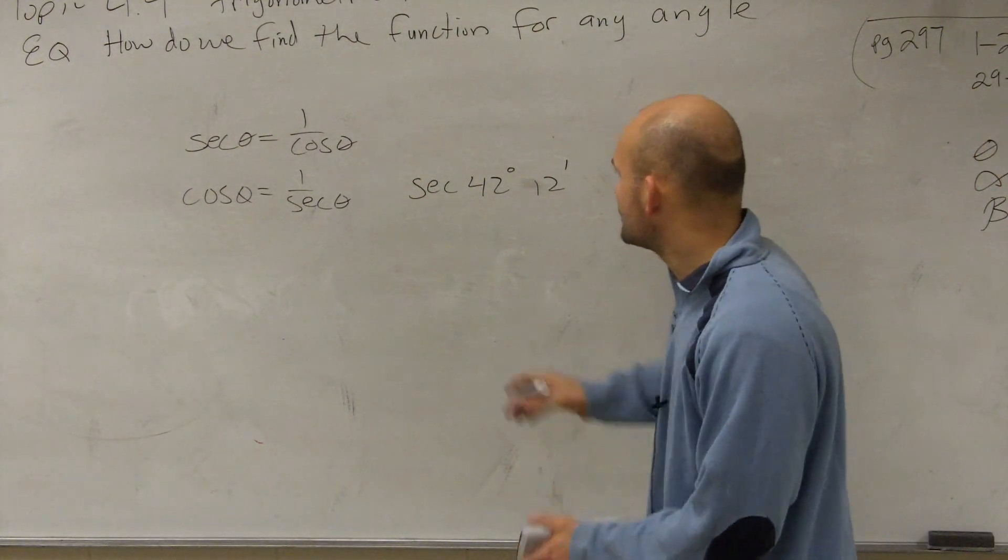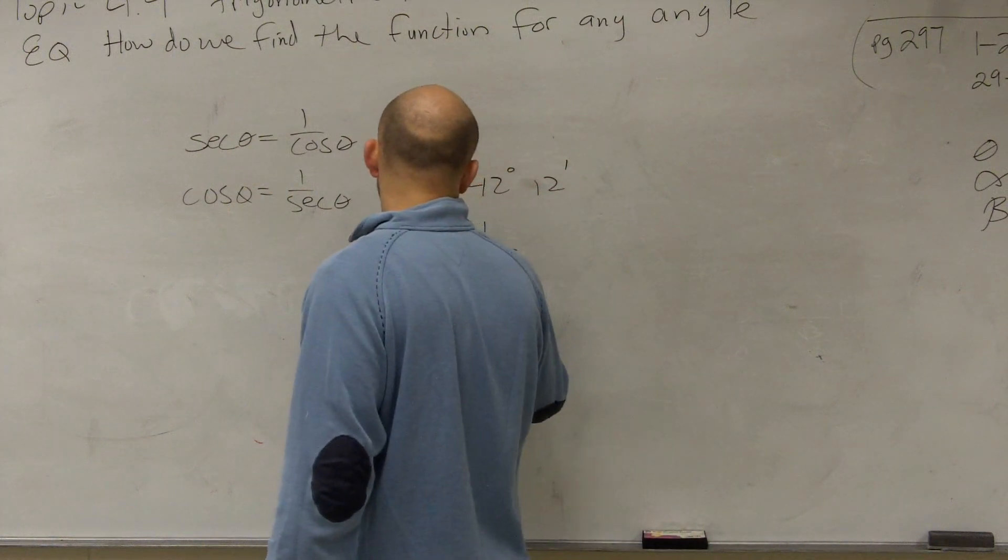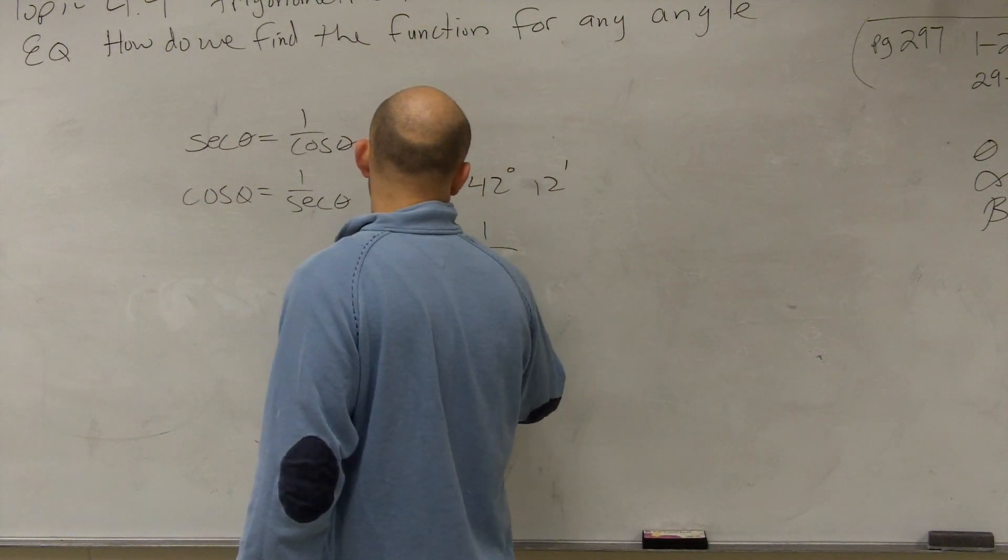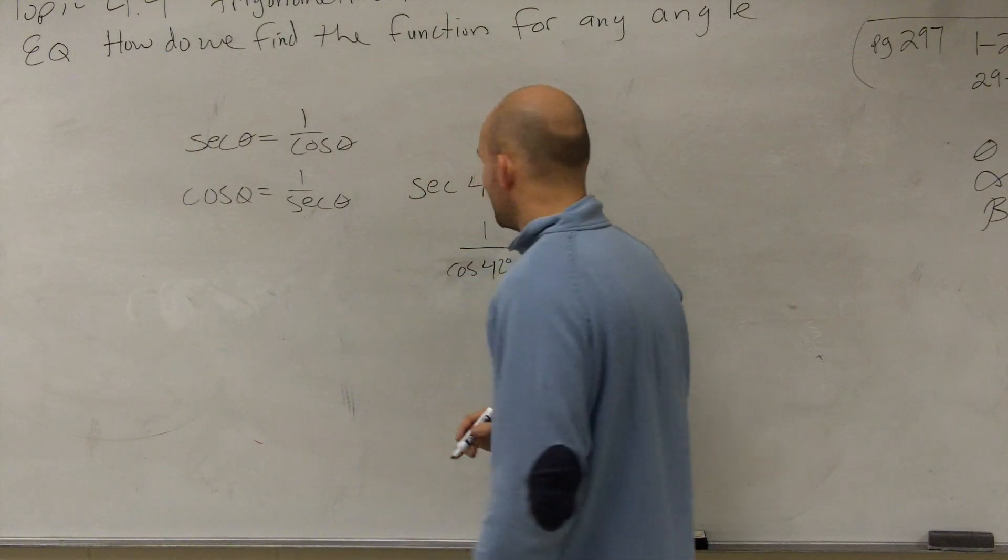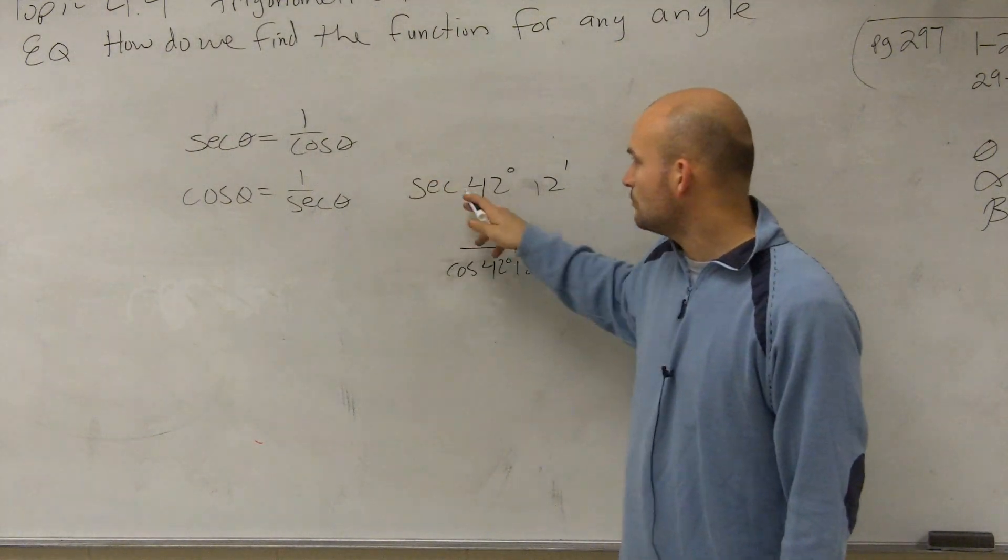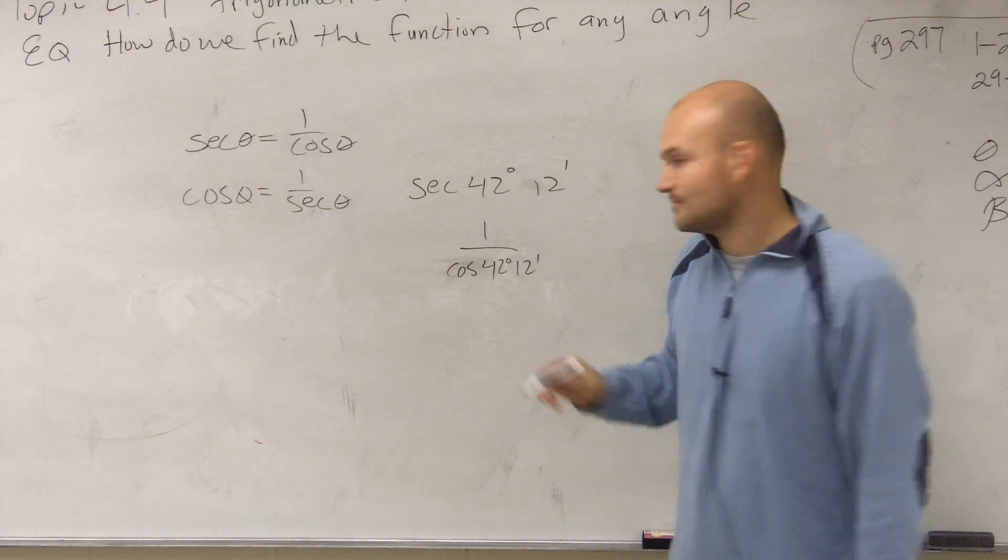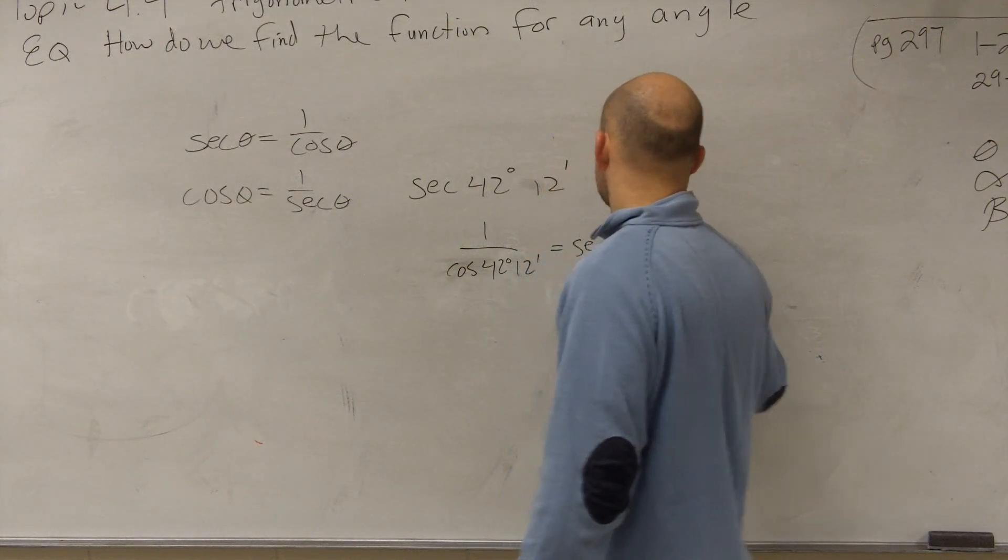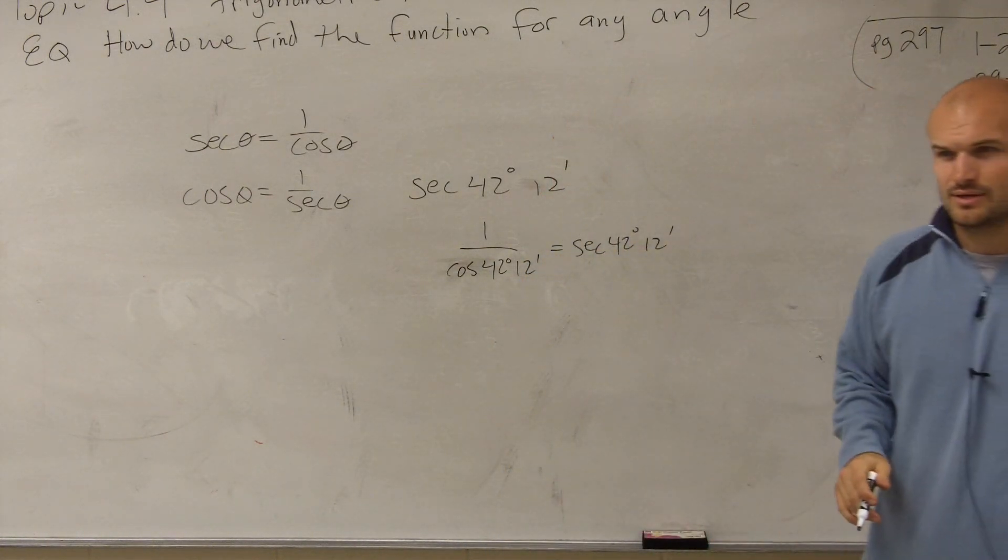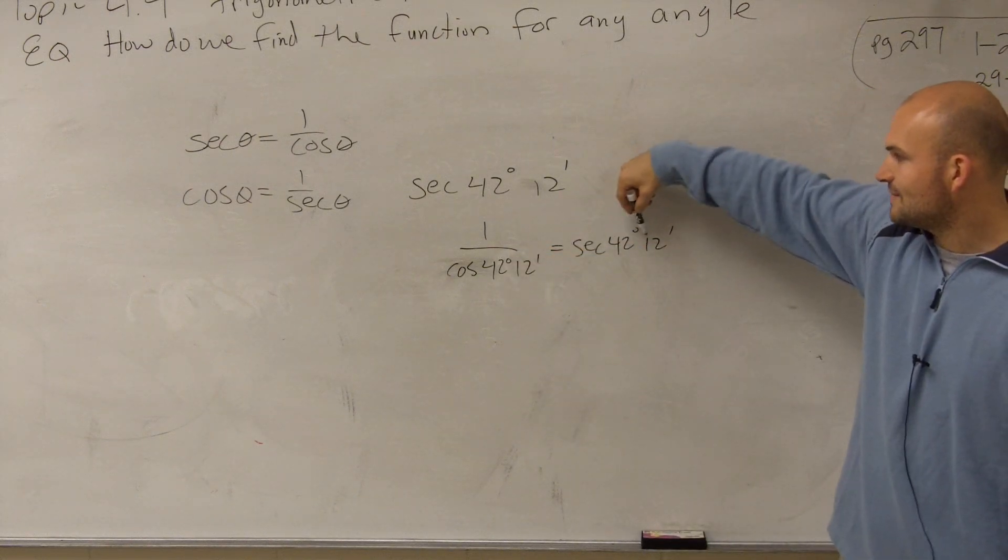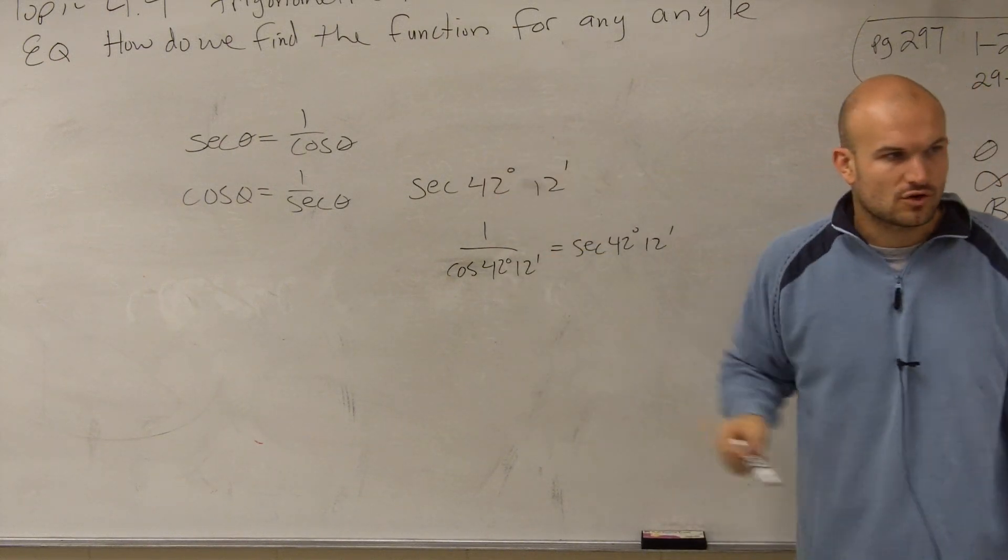However, if I do 1 over cosine of 42 degrees and 12 minutes, that equals secant of that angle. Does everybody see how that works? If I have secant, that's equal to 1 over cosine.